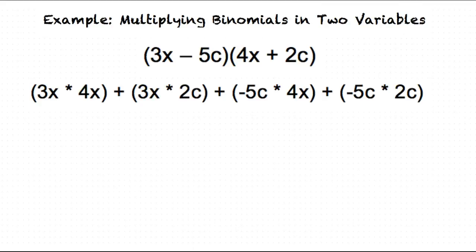Now we need to simplify giving us 12x squared plus 6xc minus 20xc minus 10c squared.